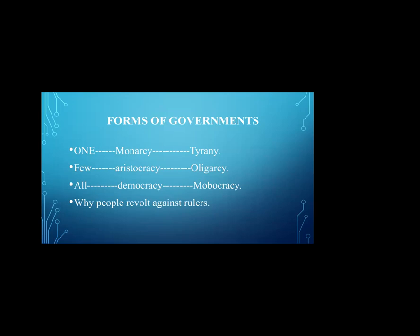When a good government exists, people obey the orders of the rulers. In monarchy, the king takes interest in the people, looks after them, provides everything, and treats them as his children. But when this form of government transforms into tyranny — a bad government — the king becomes selfish, neglects the interests of the people, suppresses and exploits them. Then the people revolt against this form of government. The monarchy transforms into tyranny, and the tyrannical form is opposed by the people.